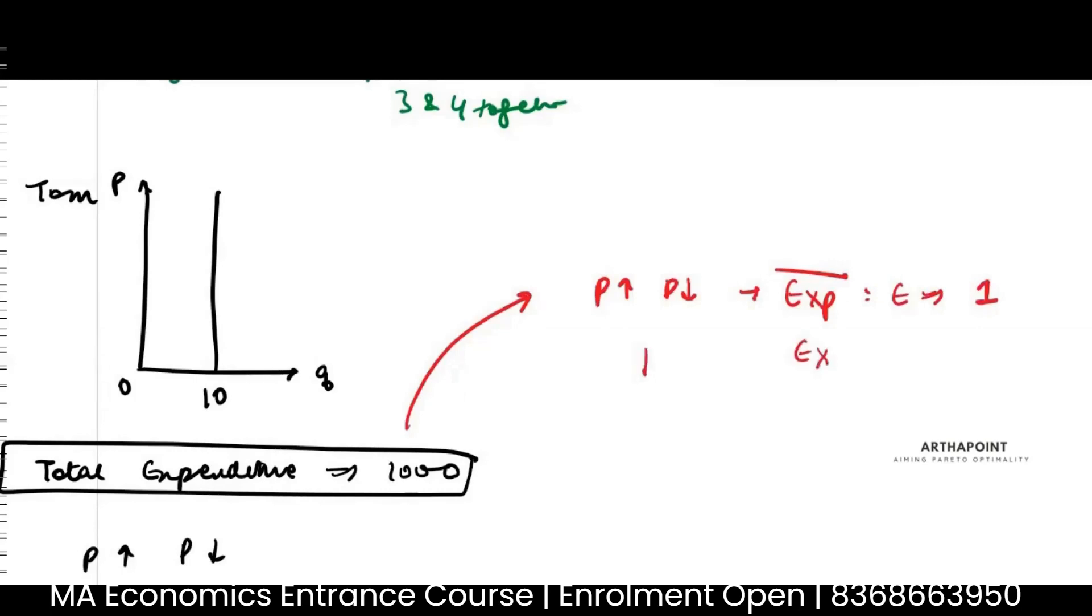If expenditure and price move in the same direction, elasticity is less than 1. If expenditure and price move in the opposite direction, elasticity is greater than 1. So here my expenditure is unchanged when price is moving.